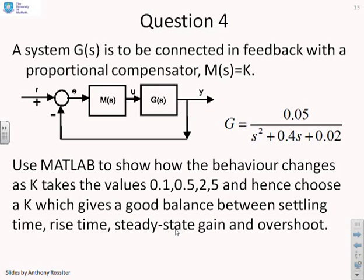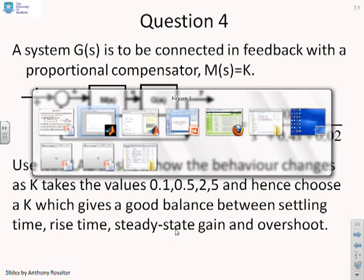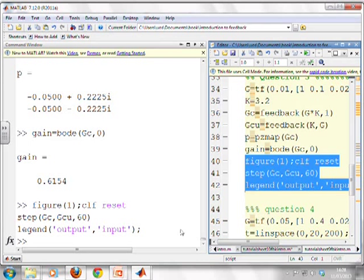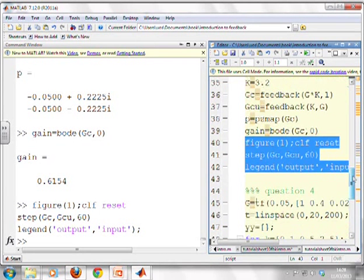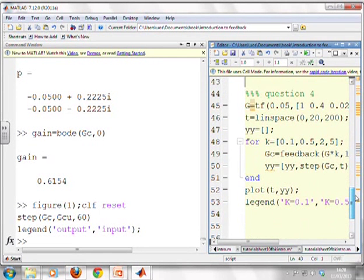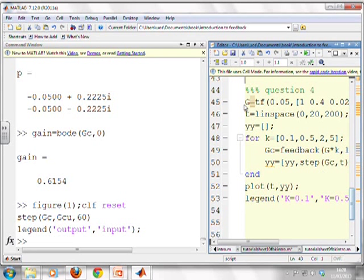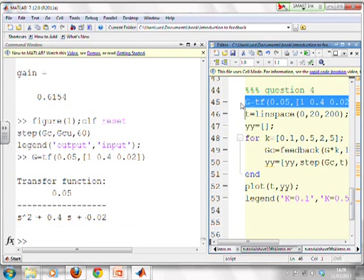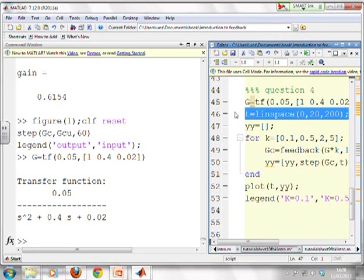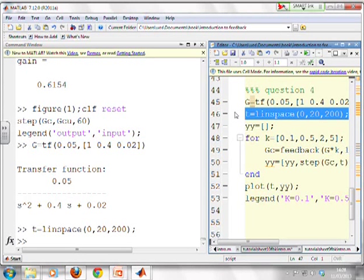So we're going to go straight to MATLAB for this particular question. And what we're going to do is we're going to use a slightly cleverer version of MATLAB to do this problem. So first, I enter the G. There you go. G is 0.05 over s squared plus 0.4s plus 0.02. And I'm going to define the timescale which I think I'll need. There it is. 20 seconds, 0 to 20, and I'll take 200 points to make sure the plots are smooth.